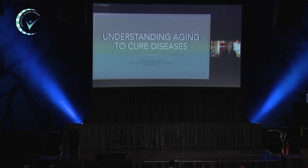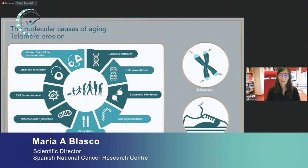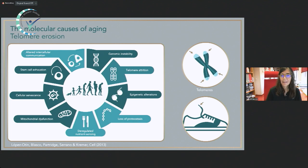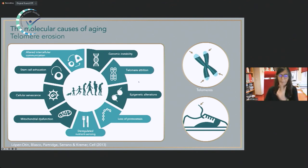My group has been working in trying to understand aging to be able to cure diseases of aging. We know that there are several molecular causes of aging. One of these causes is the shortening of structures that protect our chromosomes, called telomeres. When these telomeres get too short, this causes other hallmarks of aging — short telomeres lead to genomic instability, stem cell inability to regenerate tissue, cell senescence, etc.